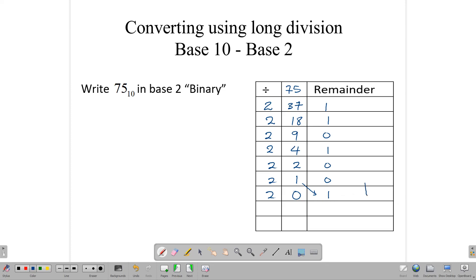So how do we get our answer? We write our answer from the remainder column, and we write it in the direction starting here, going up. So we write 1, 0, 0, 1, 0, 1, 1 in base 2.